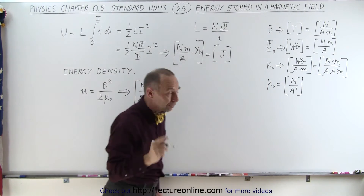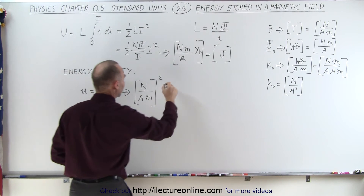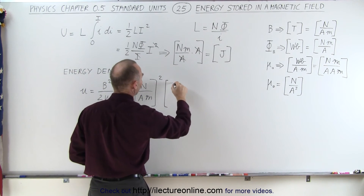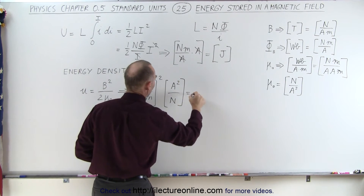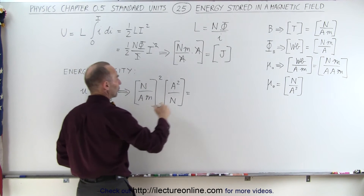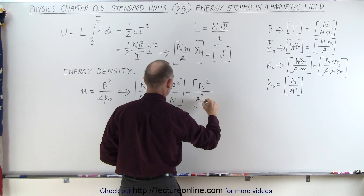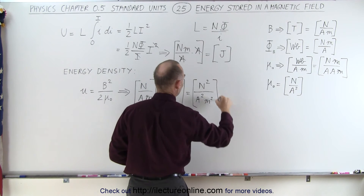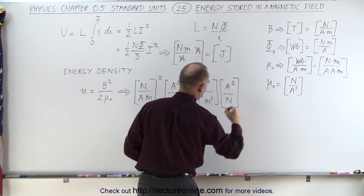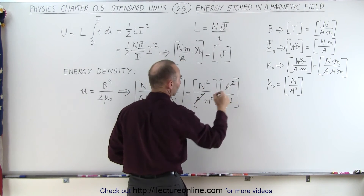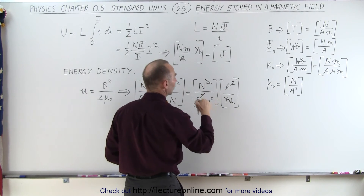Since mu-naught is in the denominator, we flip it over, writing amps squared divided by Newtons. Squaring all the units in the numerator gives Newtons squared divided by amps squared·meters squared. Multiplying by amps squared divided by Newtons, the amps squared cancel and one Newton cancels, leaving Newtons per meter squared.